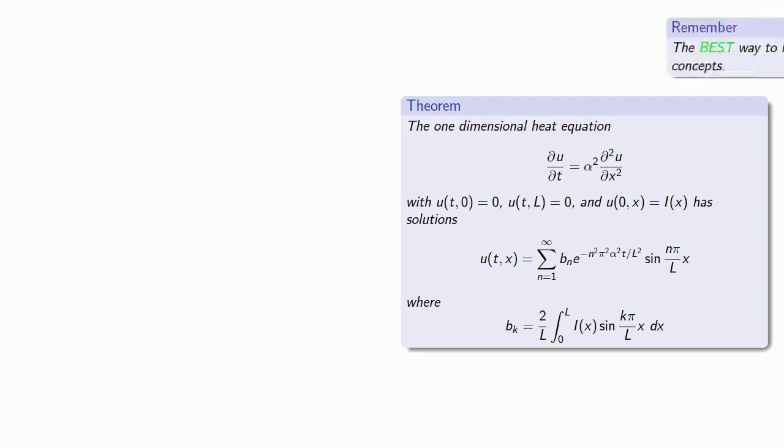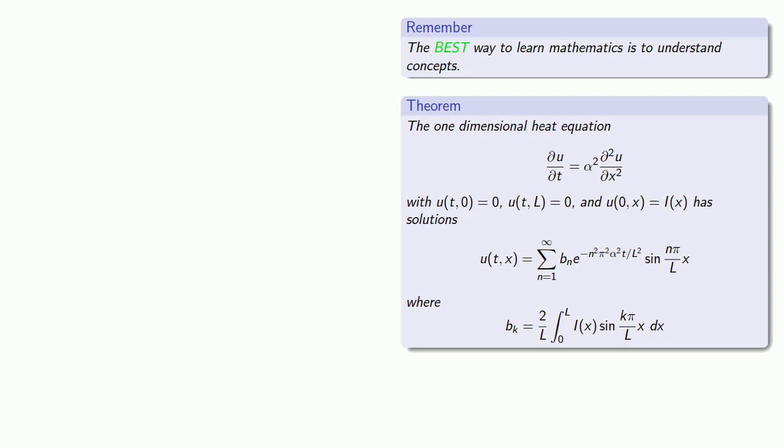Again, the best way to learn mathematics is to understand concepts. In this case, remember that our initial temperature distribution is going to be given by some function of x only. Since u of 0x is i of x, this means that i of x is going to be the trigonometric series. Once we have a trigonometric series, we can find the coefficients by multiplying by a trigonometric function and then integrating over one full period.